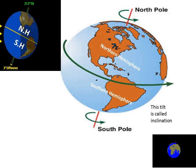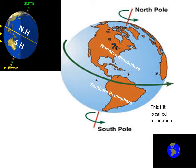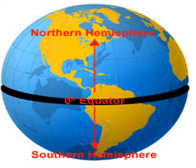The upper end of the axis is called the north pole and the lower end is called the south pole. We also have one more imaginary line that runs around the centre of the earth and divides it into two halves. It is called the equator. It divides the earth into the northern hemisphere and the southern hemisphere.